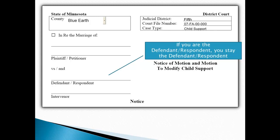For example, if you are the defendant-respondent, you will always be the defendant-respondent. It does not matter if you are the person requesting the motion to modify. The same is true if you are the plaintiff-petitioner. If your child support order is from a divorce decree, then you can check the box for In Re the Marriage of at the top of the caption. If you are never married to the other party, these forms are still the correct forms to use — just don't check the box at the top.